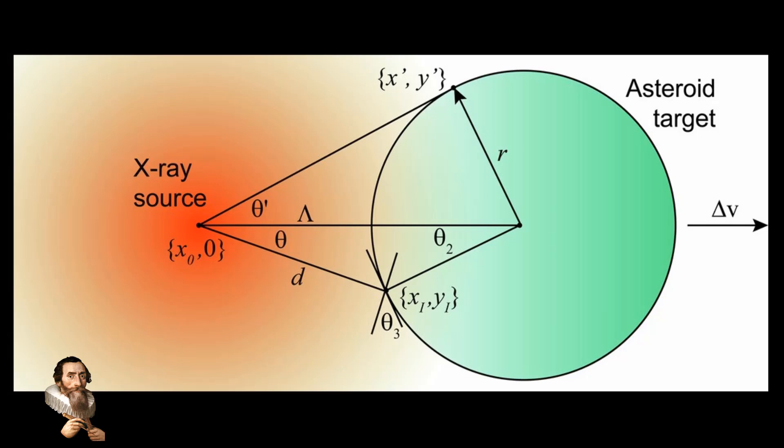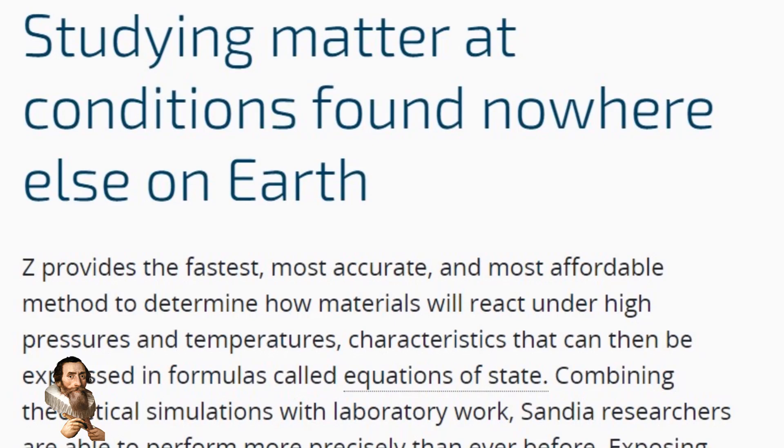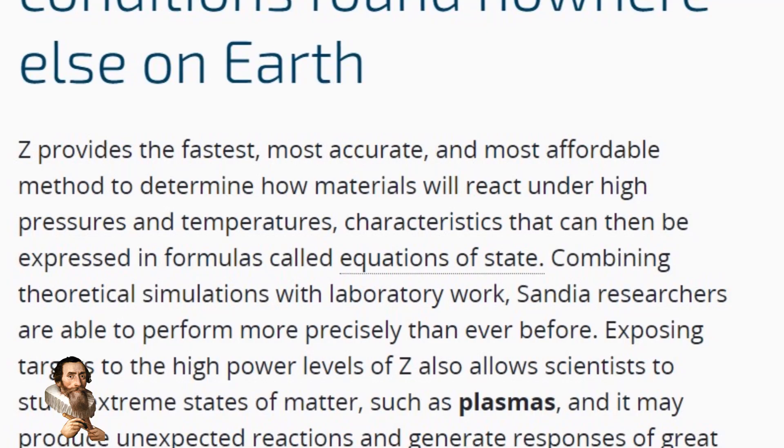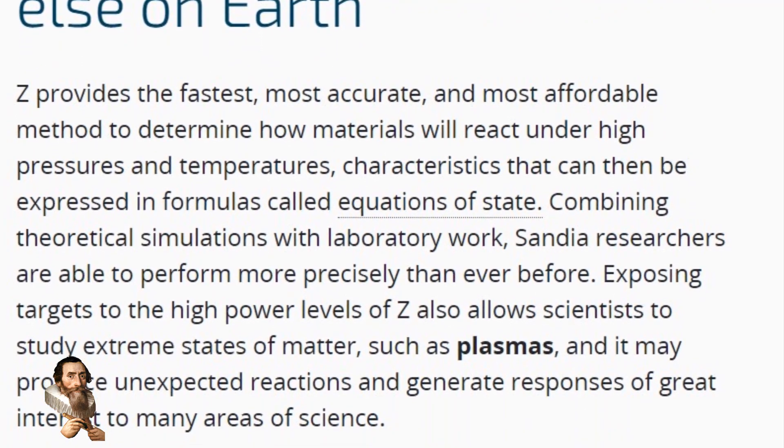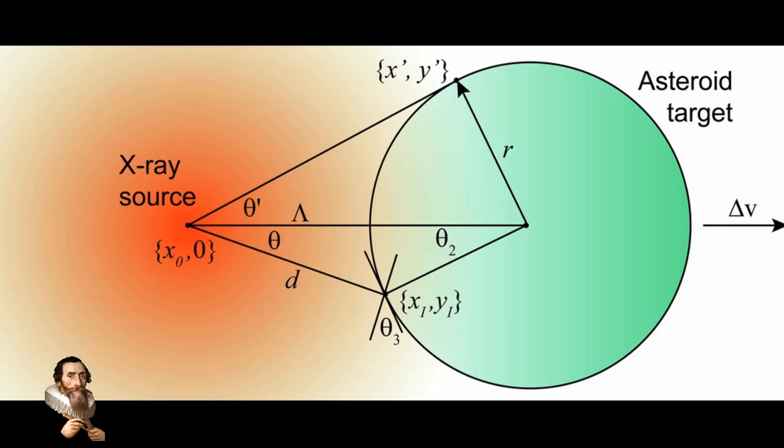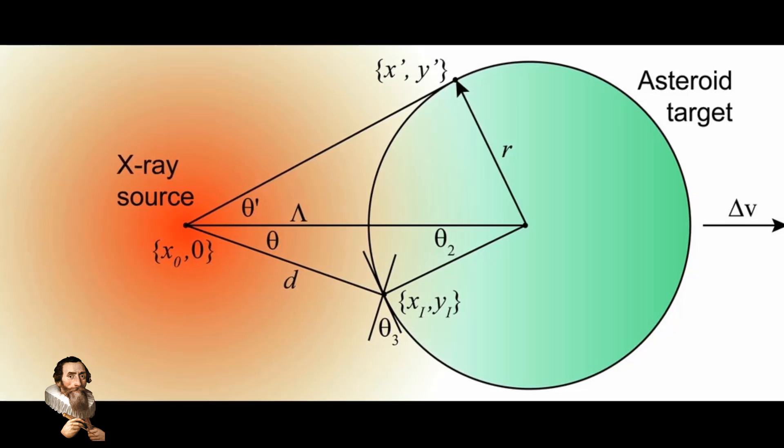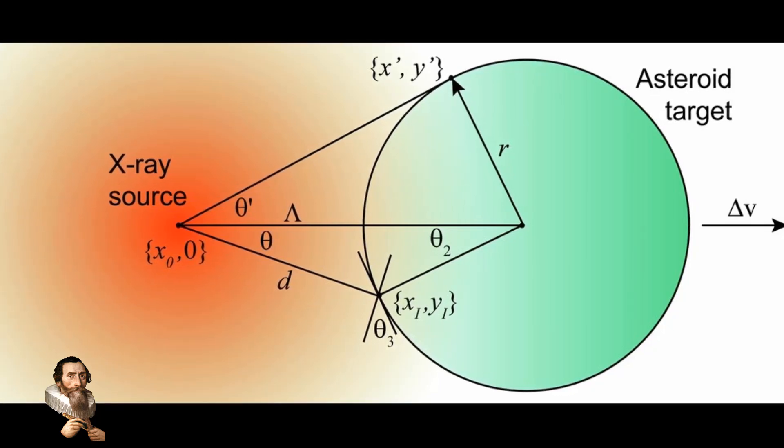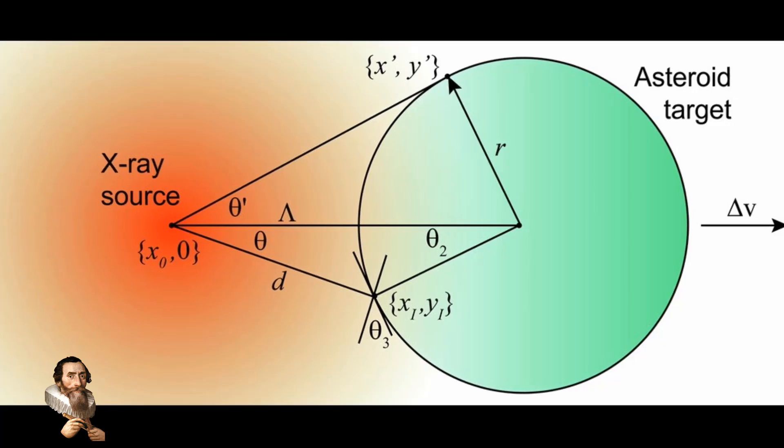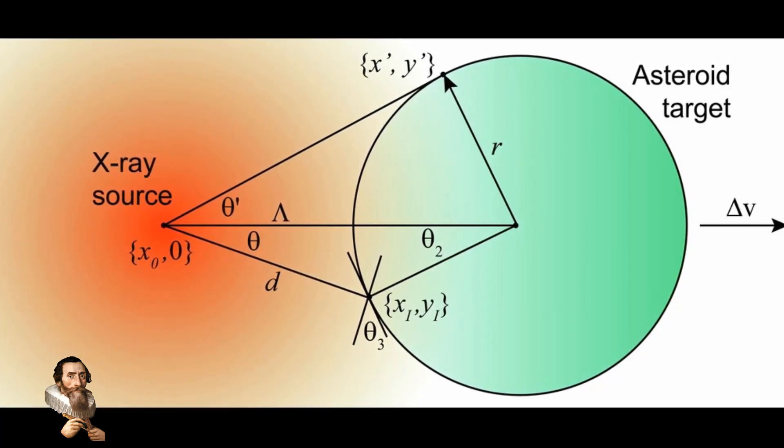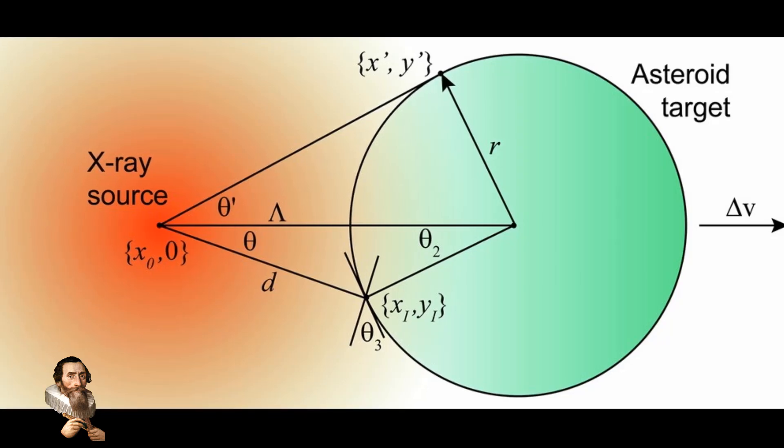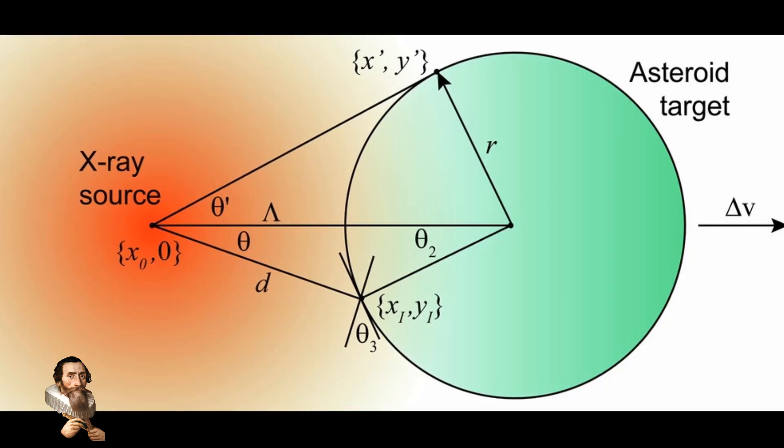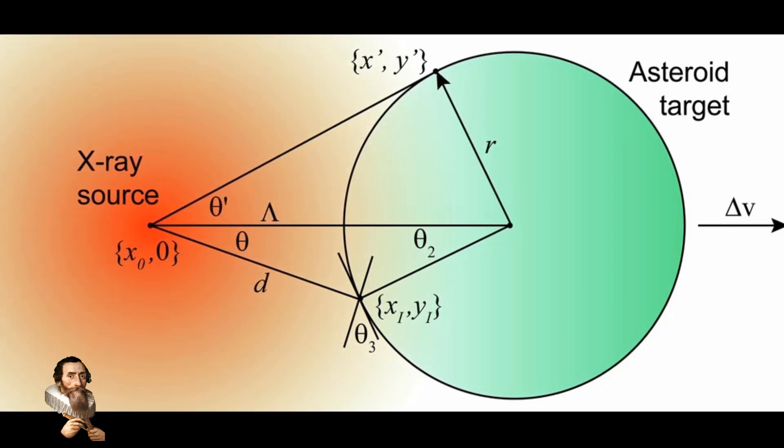Researchers at Sandia National Laboratories have conducted experiments using the Z-Machine, the world's most powerful laboratory source of X-rays. By bombarding asteroid-like targets with intense X-ray pulses, they observed that the surface material vaporized, creating jets that pushed the targets in the opposite direction. This experimental setup provides a scaled-down model of how a real asteroid deflection mission might work, offering valuable insights without the need for an actual nuclear detonation in space.